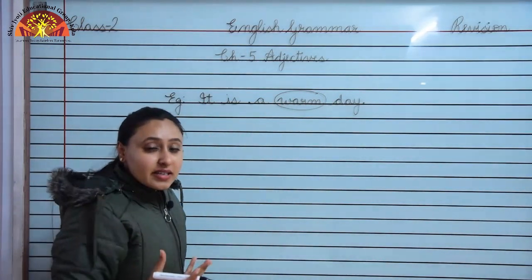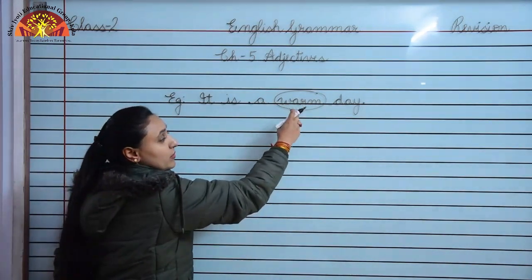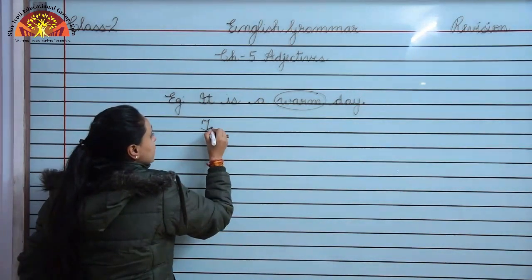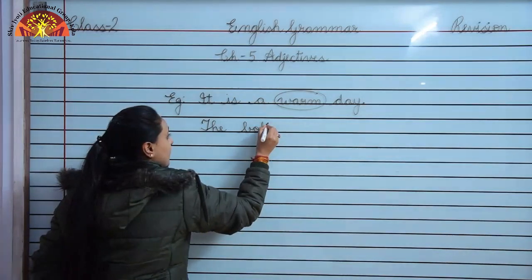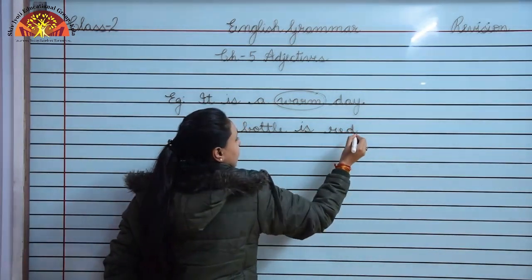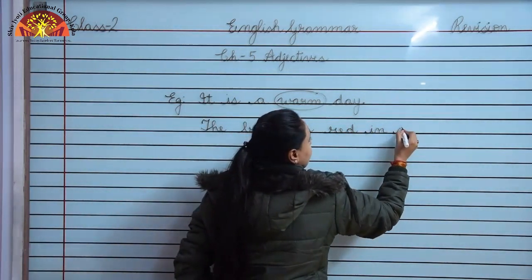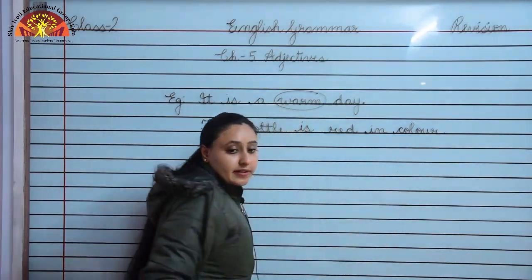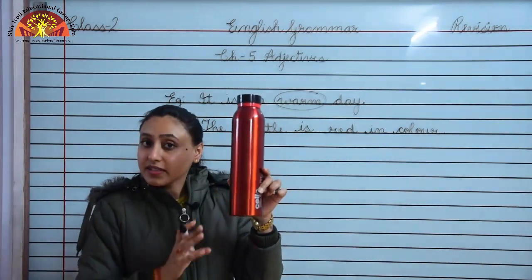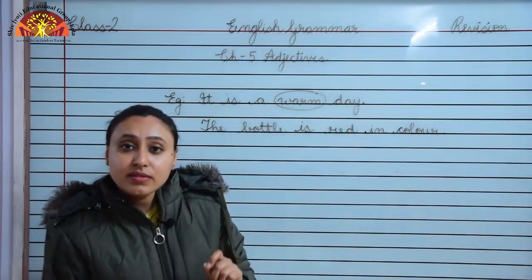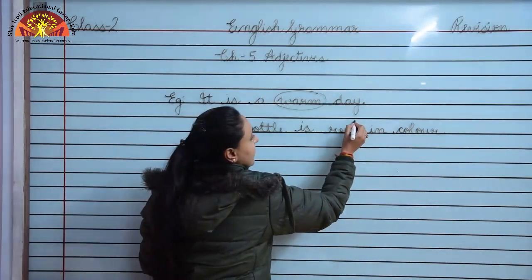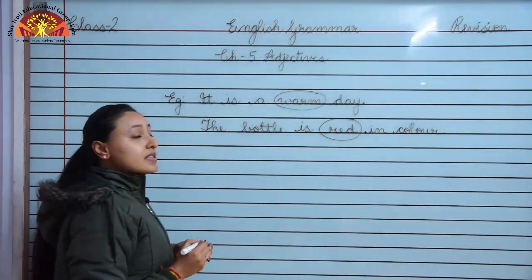So how is the day? The day is warm. The adjective here is W-A-R-M, warm. Now look here - the bottle is red in color. This bottle is red in color. What is the color of the bottle? It is red in color. Color also describes a noun. The adjective for bottle is red.